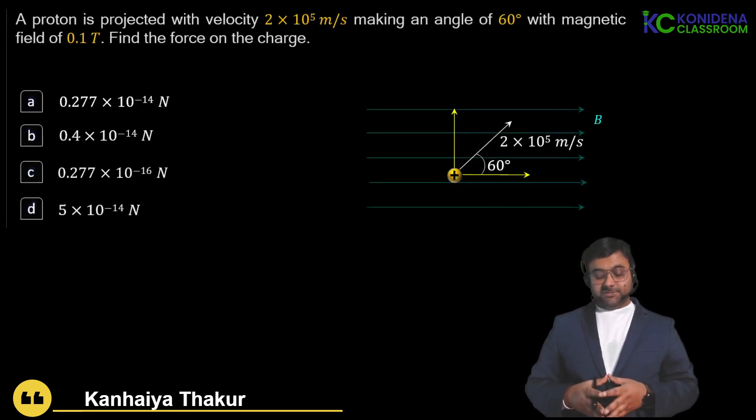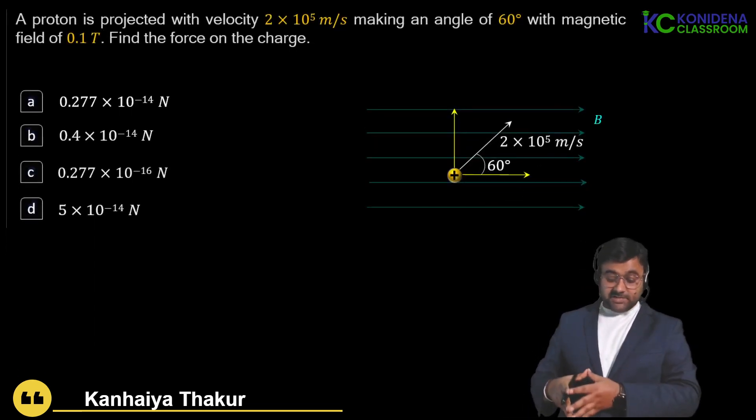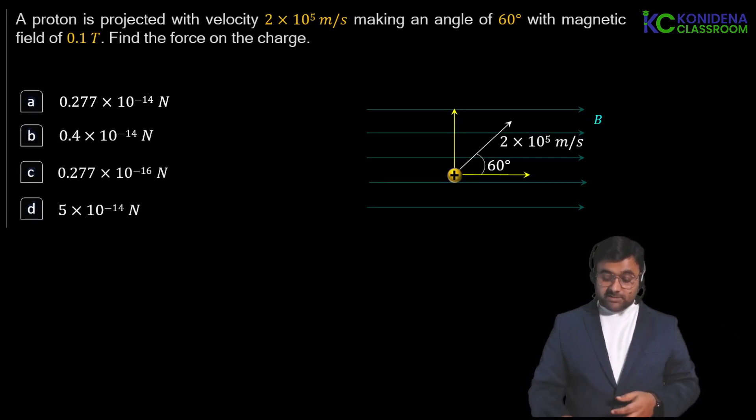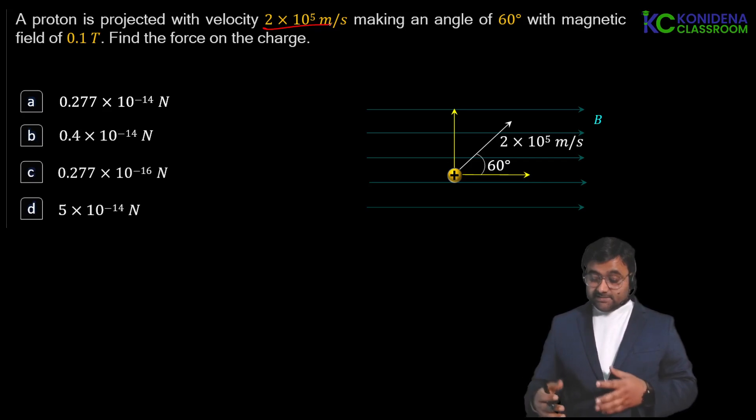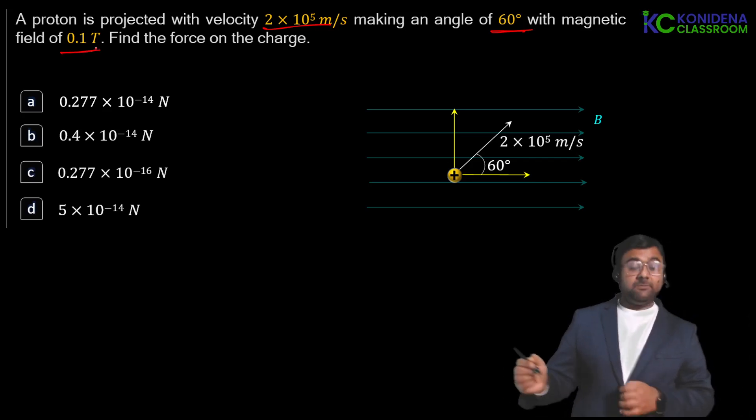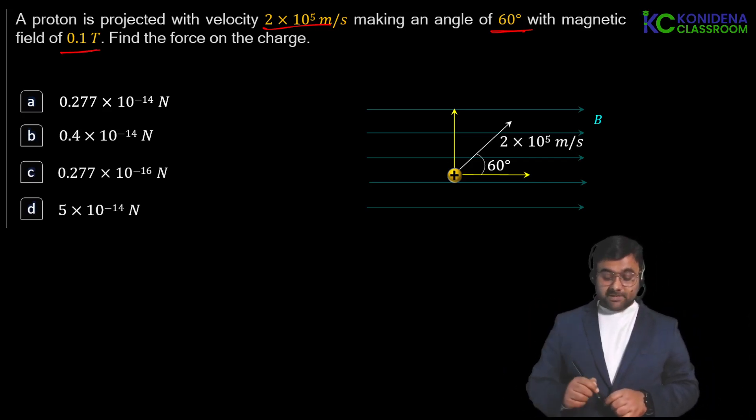Let us see what is the question. The question we have: a proton is projected with a velocity 2 x 10 to the power of 5 meters per second, making an angle 60 degrees with magnetic field. Angle is also given to us. Magnetic field is 0.1 Tesla, and we have to find out the force on that particular proton.